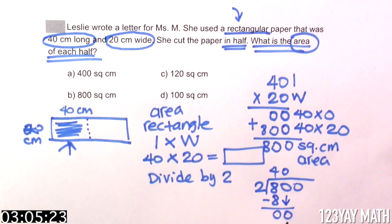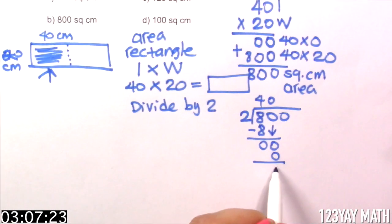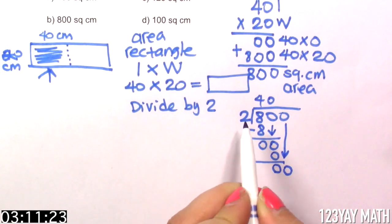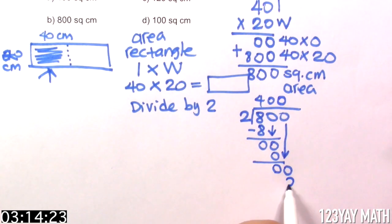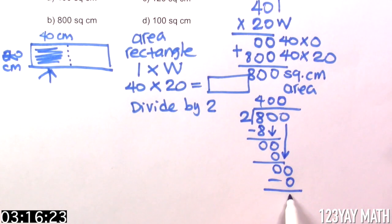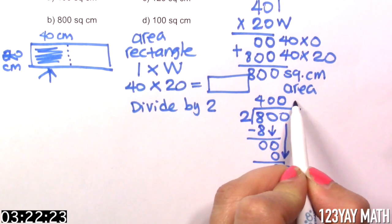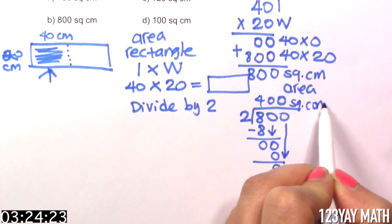2 times 0 is 0. Subtract. And we don't have anything else to drop.